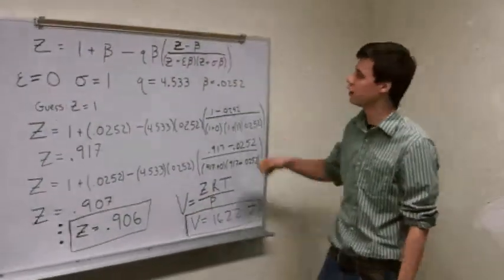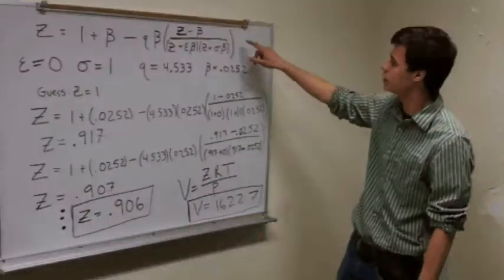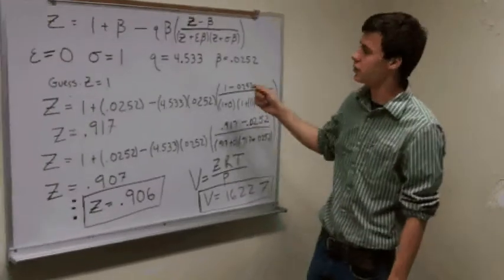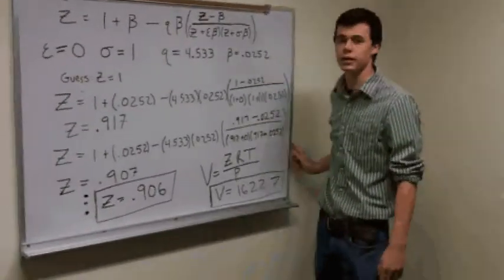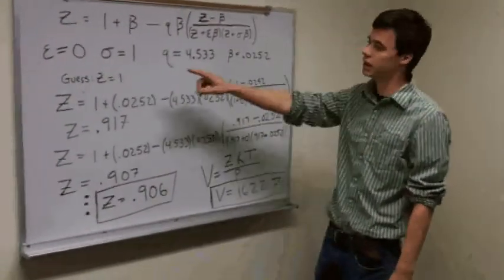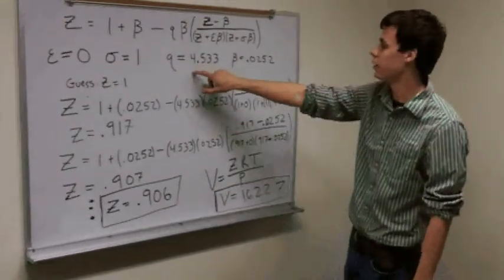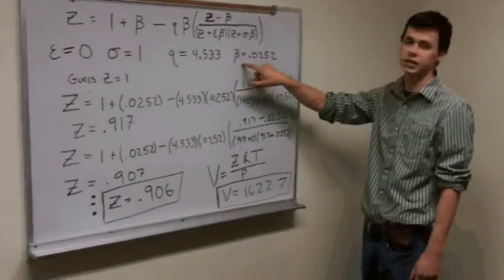The next step in solving this problem is to write the general equation for the cubic equation of state. We see from table 3.1 that in the case of the Redlich-Kwong equation of state, epsilon equals zero and sigma equals one. And then we've also written our calculated Q and beta values from the previous step.